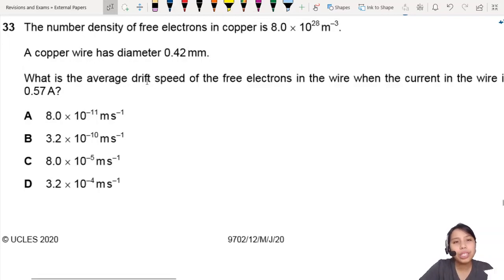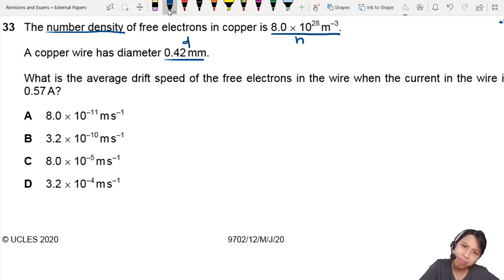If you are in a question and you see them talk about number density, this is N, and you see diameter D, and you see drift speed, you should straight away think of that equation I equals NAve Q, or NAVQ, or ANVQ. It's the same thing. You will see this in the front page of every exam booklet.